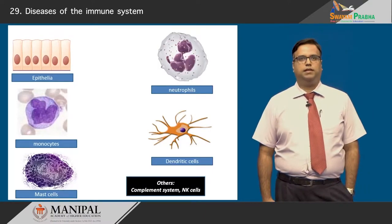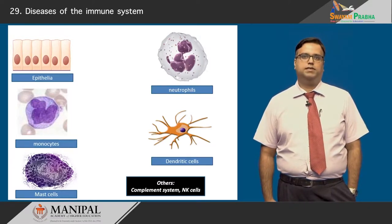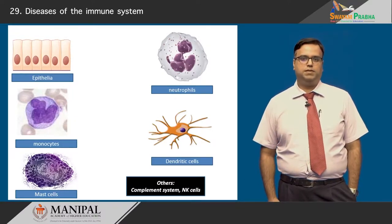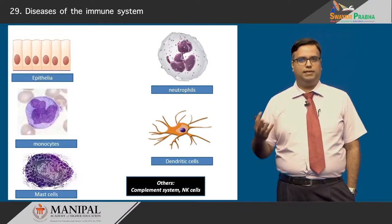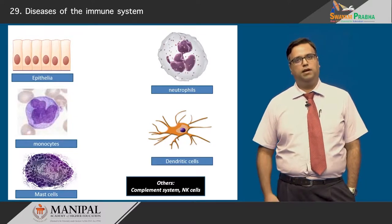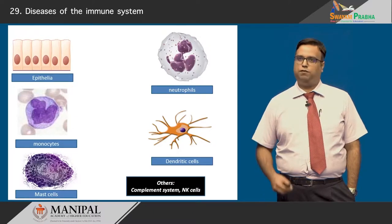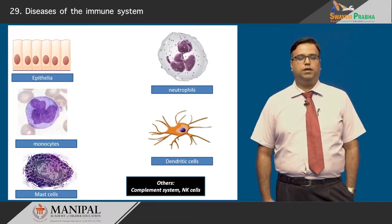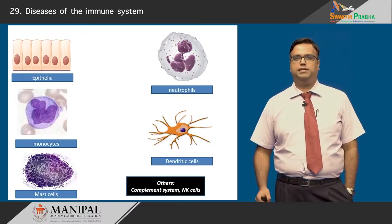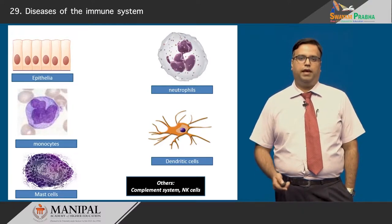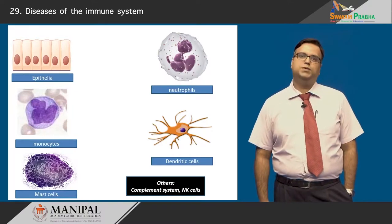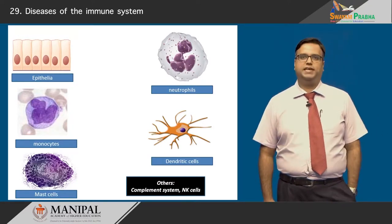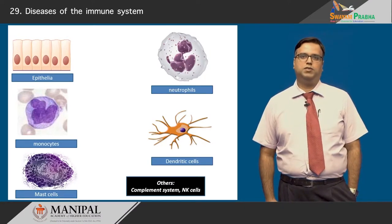Apart from T and B lymphocytes, there are other cells of the immune system such as neutrophils — whose role ranges from phagocytosis to complete eradication of organisms. Dendritic cells use their tentacles to drag in cells and process them so they become recognizable to T cells. Monocytes become macrophages in tissue and have an important role of scavenging or phagocytosing the organism. Mast cells release mediators important in hypersensitivity reactions. Epithelia form a physical barrier with secretory function, and the complement system and NK cells also have important contributions.